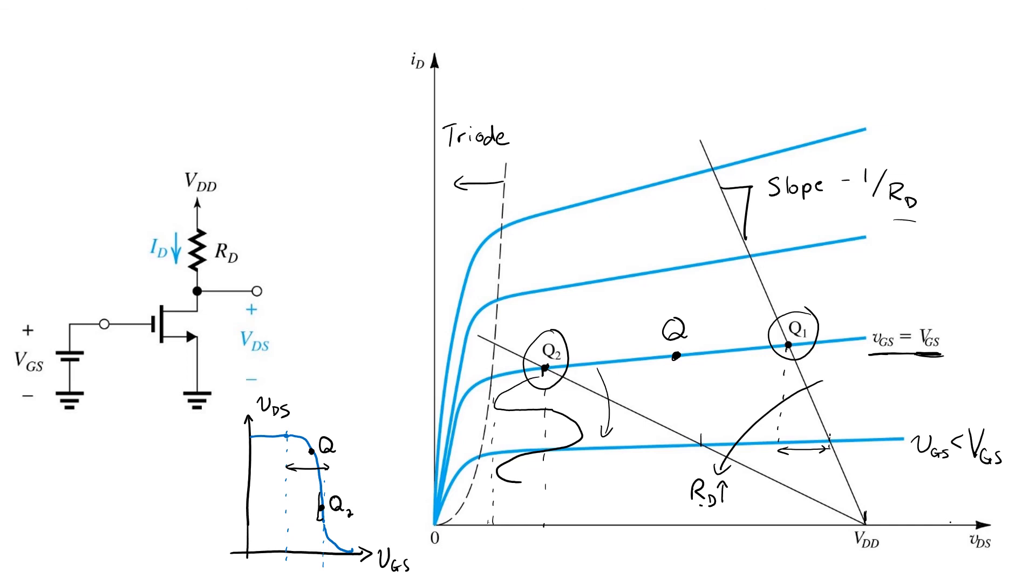But what's nice about the graphical analysis on the right is that it has the load line, which makes it clear that the way the designer is choosing between those operating points is by selection of the value of RD.